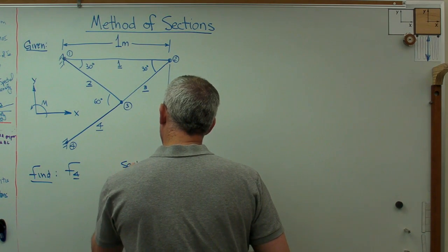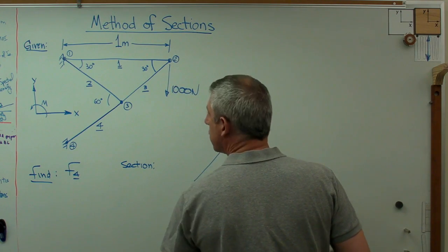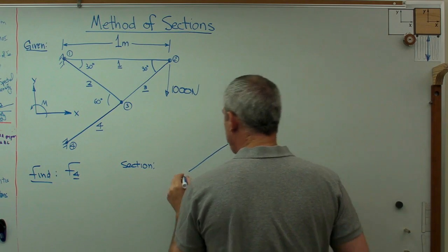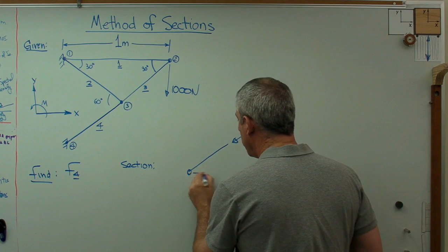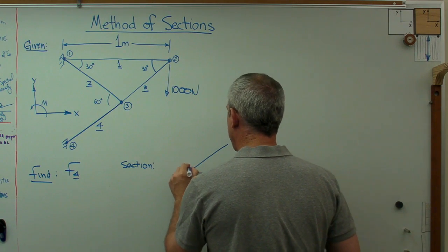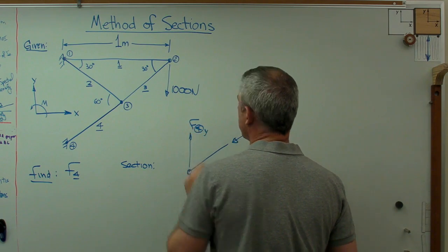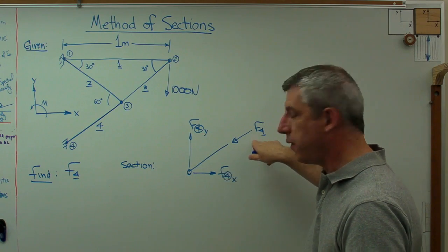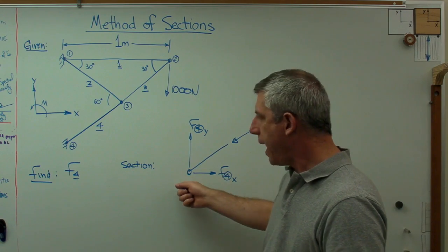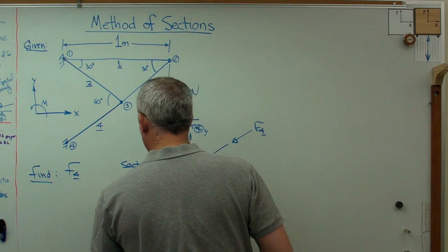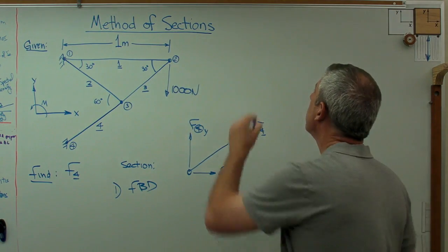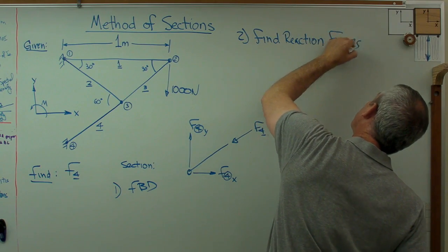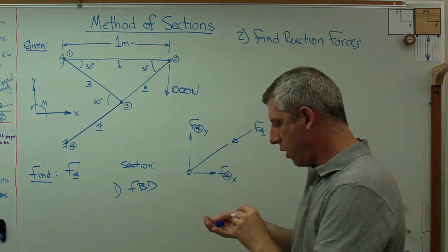The section I'm going to use looks like this. There's the force on bar four. At point four I'm going to have a force going this way — I'll call that F4x — and I'll call this F4y. Those are the reaction forces that are going to be there. If I know what those two reaction forces are, I can figure out the bar force, and I'm done. So step one: free body diagram of the section of interest. Step two: find reaction forces. If I know what the reaction forces are here, I'm good to go.